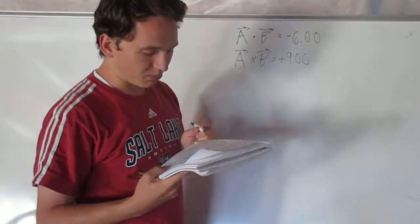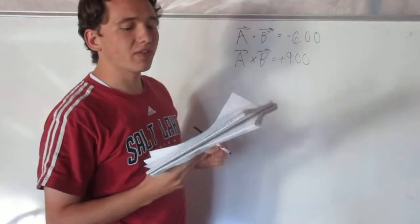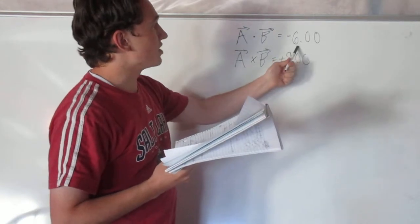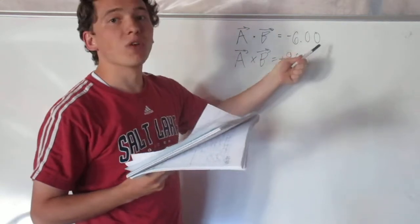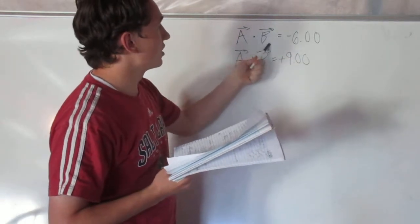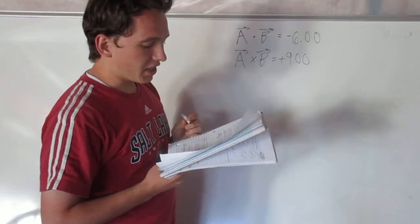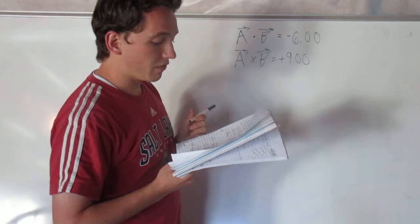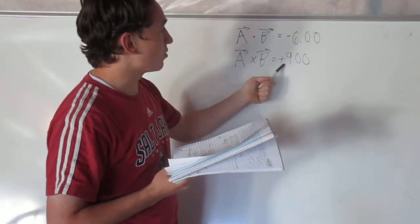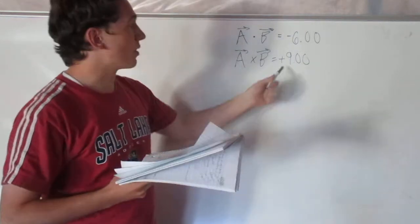Alright, so this problem is problem 1.79. In this problem they give us the scalar product, which is the dot product, equal to negative 6.00. They also give us the vector product, which is the cross product, equal to positive 9.00.